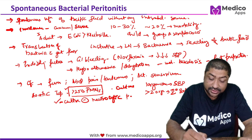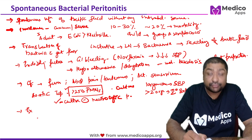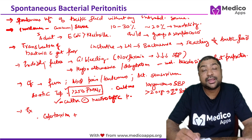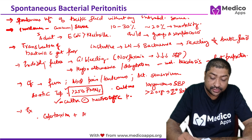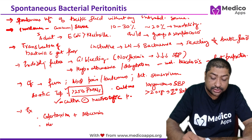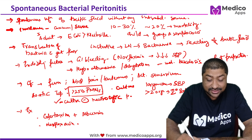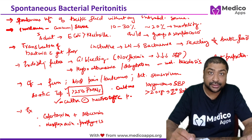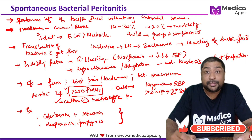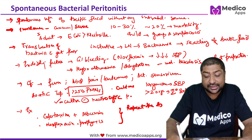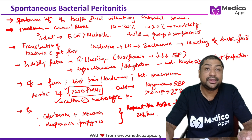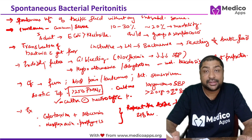For management, we use a third-generation cephalosporin like cefotaxime. Since hypoalbuminemia is a major predisposing factor, we also give albumin to these patients. Norfloxacin is given as prophylaxis, especially in patients with GI bleed. We repeat the ascitic tap after 48 hours to assess response and check if SBP has converted to secondary bacterial peritonitis.